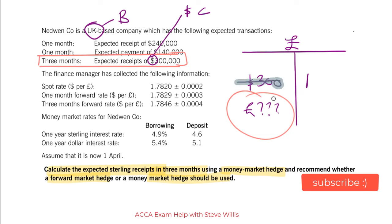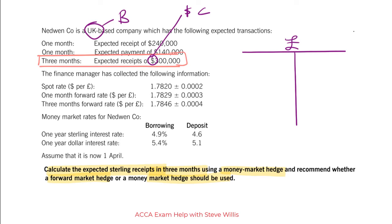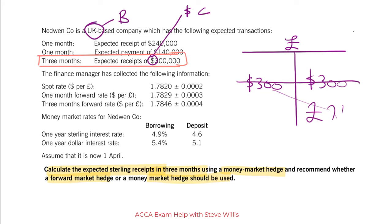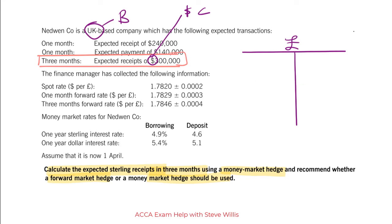Let's just imagine if it were a payable — if we had to pay $300, it would look like this. We would have a $300 liability on our balance sheet, and we would then need to construct the asset: $300 on deposit. I would get that by borrowing some amount of British pounds, converting it at the spot rate, and then depositing it. Those two cancel each other out, and I'm left with the liability. But we're not doing that — we are hedging the receipts, so let's put it back how it was.